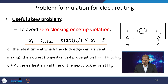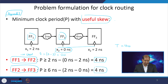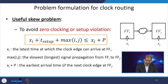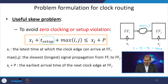To avoid setup violation, we use the max constraint equation. The term max(i,j) is the longest path in the combinational logic between flip-flop i and flip-flop j, and x_j − x_i is δ. Delta is basically the arrival time at flip-flop j (x_j) minus the arrival time at flip-flop i (x_i). This is your skew.